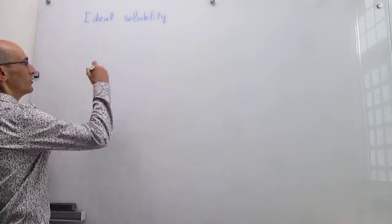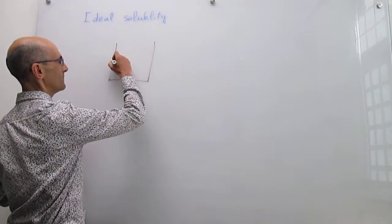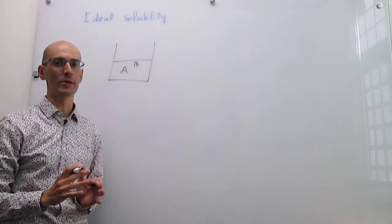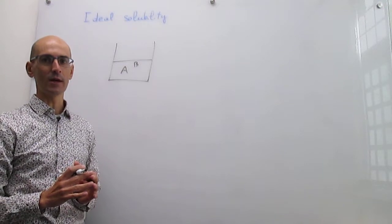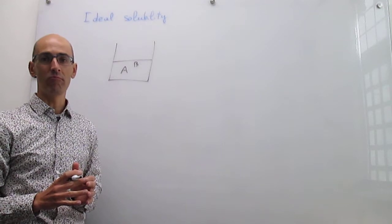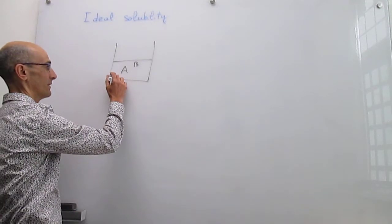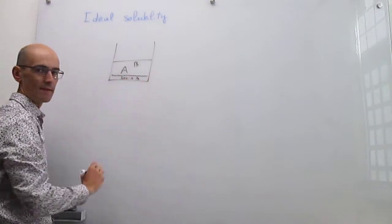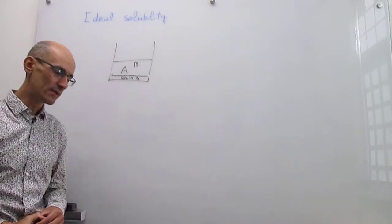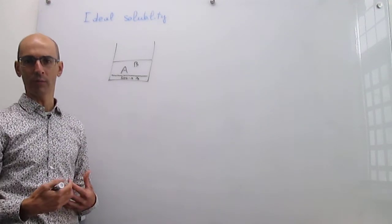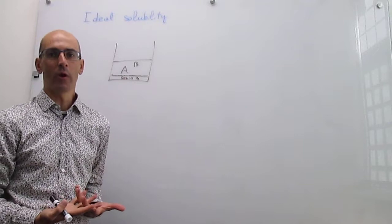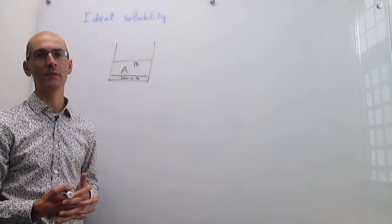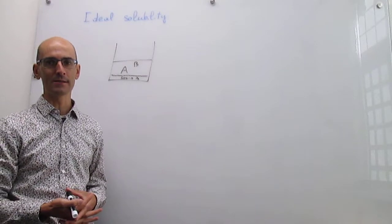Here's the system. You have a solution of A, which is your solvent, and it also has B. This solution is saturated in the solute B, meaning you have so much that it can't dissolve anymore. When that happens, you expect to find solid B at the bottom. This happens for any saturated solution. The question then is: how can we relate the solubility of B in that solution as a function of temperature? We're going to use thermodynamics to examine that.